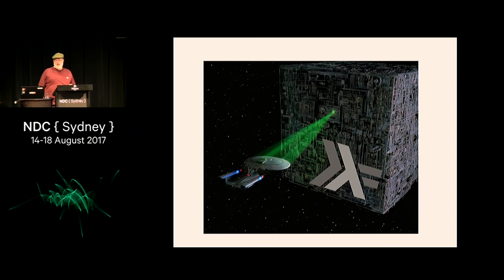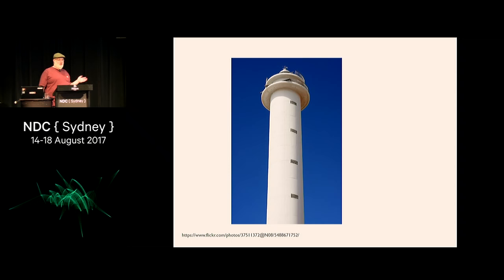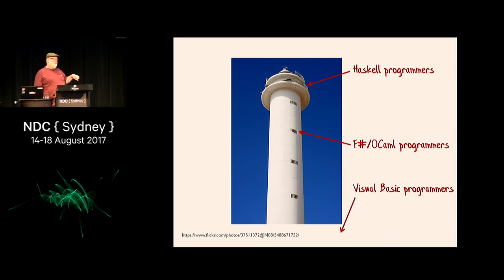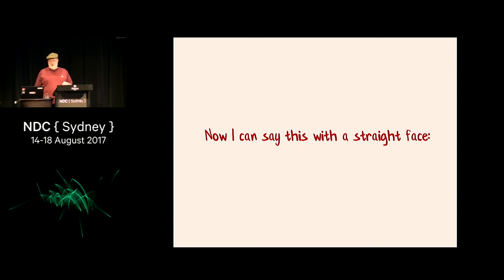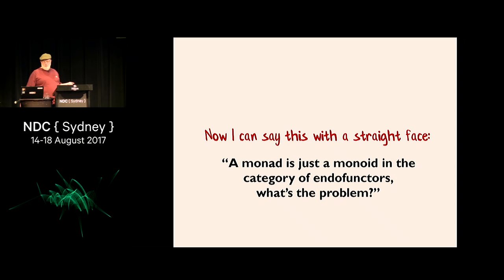Then I was introduced to some functional programmers, and I was basically captured and taken away to an ivory tower. The Haskell people actually live at the very top. The F# people - that's me - are on the second floor. The Visual Basic people are down in the basement, and the Lisp people are on a completely different planet. I've come back from the ivory tower and can now say with a straight face: a monad is just a monoid in the category of endofunctors. Yeah, that's easy - what's the problem?